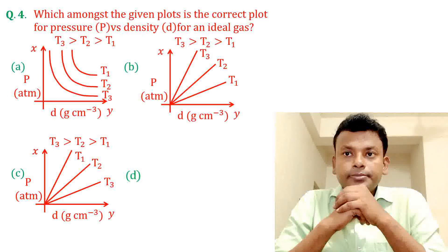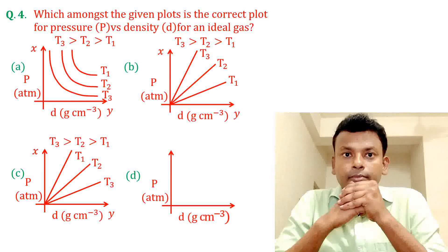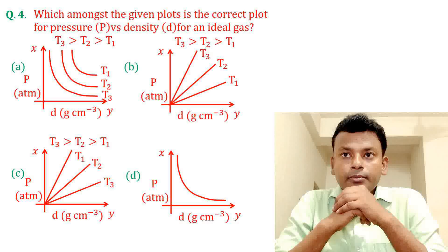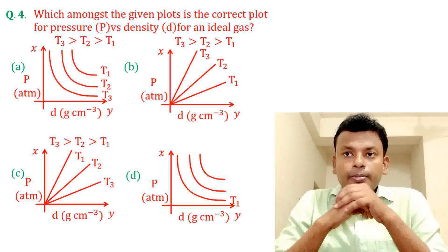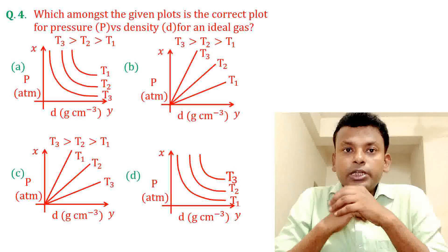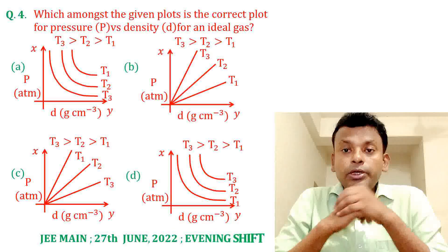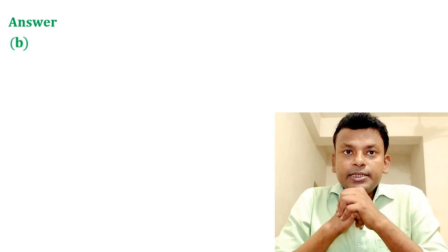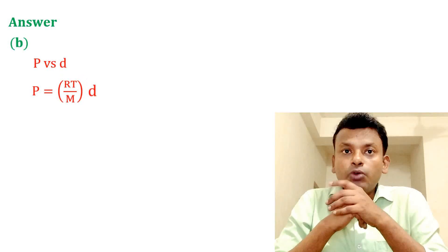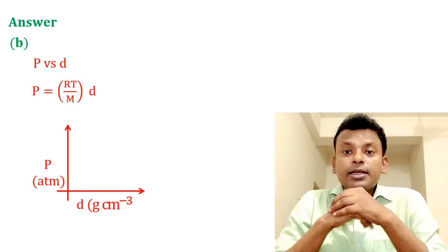Option D. This question was set in JEMN 27th June 2022 evening shift. Answer: Option B is the correct answer. From the ideal gas equation, P = RTρ/M, so pressure is directly proportional to density, giving a straight line. Therefore Option B is correct.